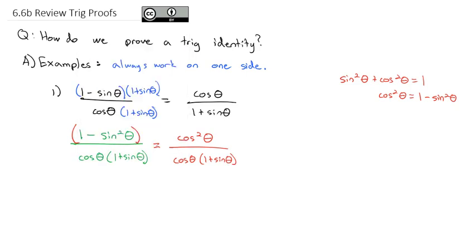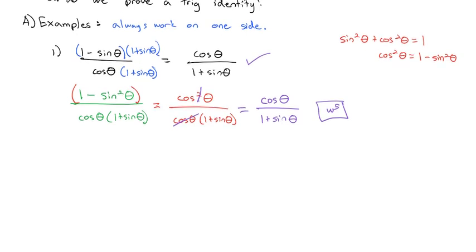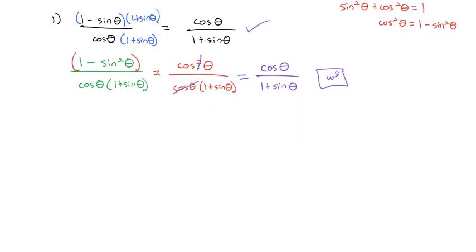So that numerator, 1 minus sine squared, is the same as cosine squared theta over the denominator of cosine theta times 1 plus sine theta. That's really nice because now it's factored and I have cosines on top and bottom. We can cancel one cosine from both the numerator and denominator, leaving us with cosine theta over (1 plus sine theta), which was what we wanted from the original problem. We have proved this identity using the Pythagorean identity and the trick of multiplying by a conjugate.